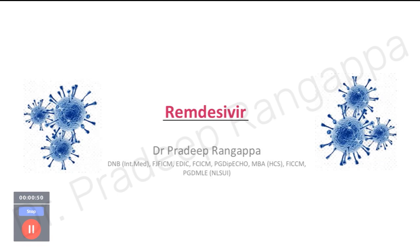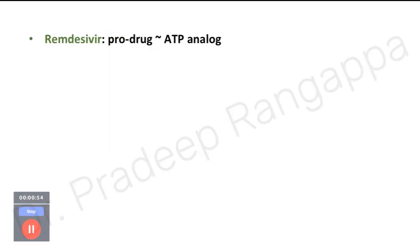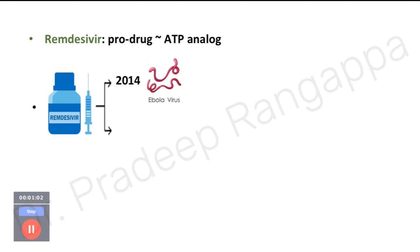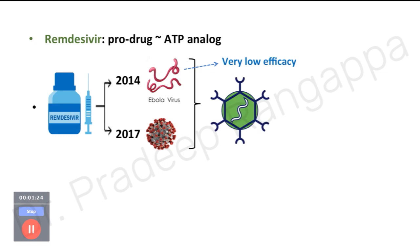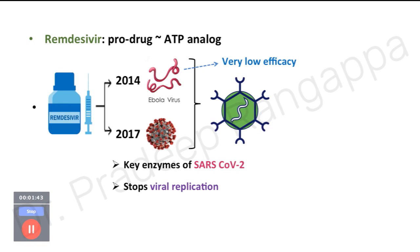As a preamble, remdesivir is a prodrug — it is not an active drug but produces an active component which acts against COVID, and it's an ATP analog. Remdesivir was first brought in for the Ebola virus in 2014 but had very low efficacy. In 2017, it was repositioned for SARS-CoV-1 and then extrapolated to SARS-CoV-2, where it was found to act on key enzymes of the virus.